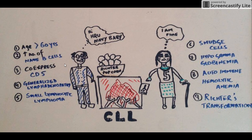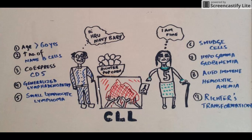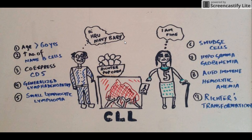CLL most often occurs in the older population — mostly in adults more than 60 years of age — as shown by these old people with the cane in their hands. It is a condition in which we have an increased number of naive B cells in the circulation, shown by this old guy saying 'Hi, how are you, Navy Baby?'